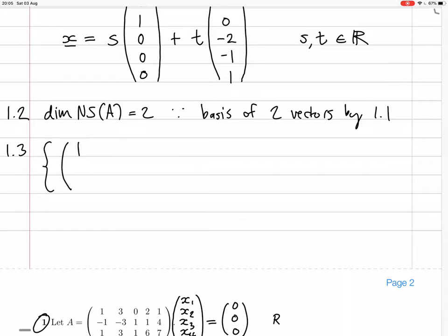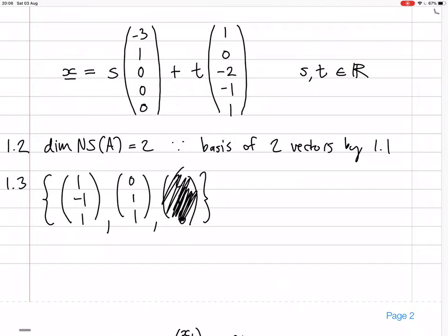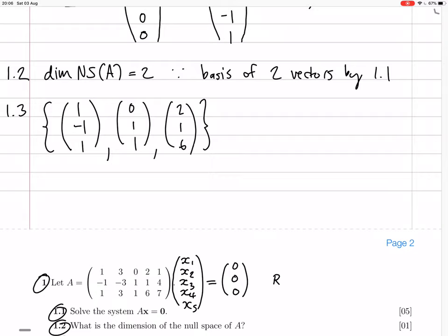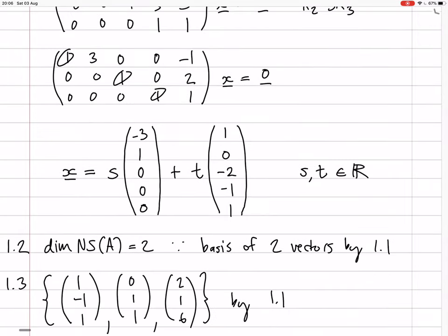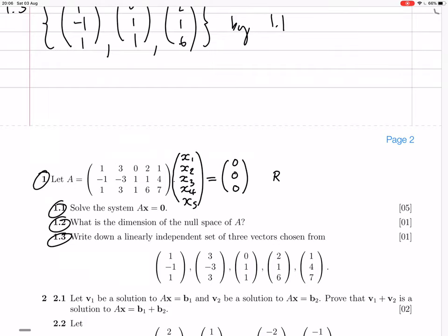The first vector is 1, minus 1, 1. The third vector is 0, 1, 1. The fourth vector is 2, 1, 6. These are the vectors from columns 1, 3, and 4, which correspond to pivot columns from our work in 1.1. That completes this question.